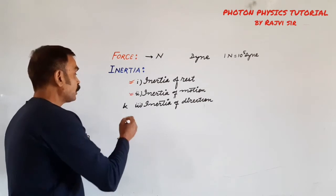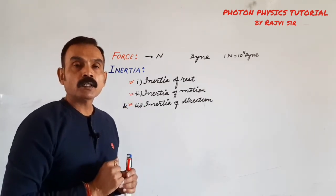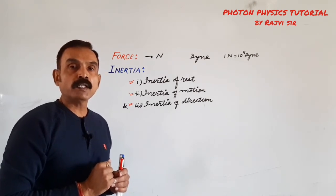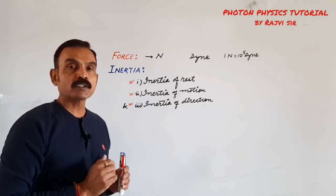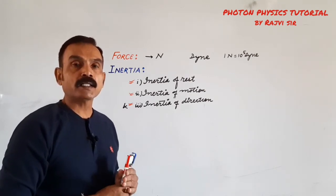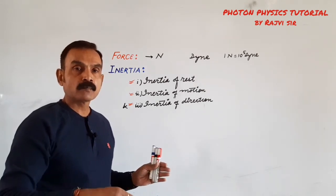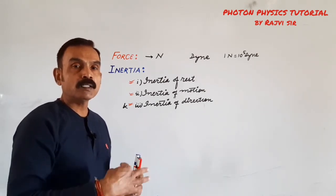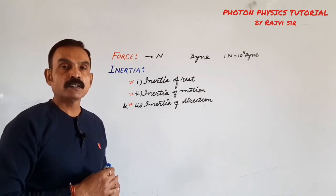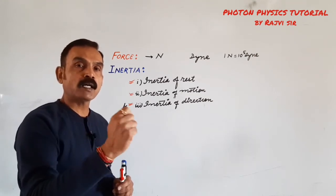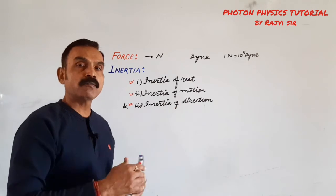Third one is inertia of direction. What is inertia of direction? According to inertia of direction, the body tries to maintain its direction in which it is moving. Jaise ki koi wheel hai, uske par mud laga hua hai, wheel jab teji se ghoomta hai, to jo mud hai wo tangentially fly off hota hai. Ek stone ko aapne ek thread se baandhke circular motion kara rahe hain, thread ko aap chhod denge to wo bhi tangentially fly off hoga.